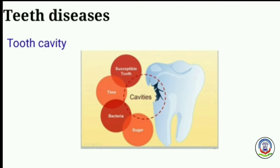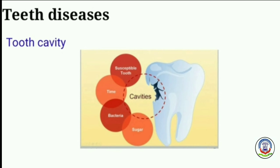Many bacteria are present in our mouth, most of which are harmless. However, if we do not clean our teeth after eating, harmful bacteria begin to grow. These bacteria and food particles mix together and form a sticky layer called dental plaque on the surface of the teeth. If dental plaque is not removed by brushing, the bacteria release acid, which slowly damages the tooth enamel. Destruction of tooth enamel is called tooth decay. If untreated, it may lead to tiny holes called tooth cavities.